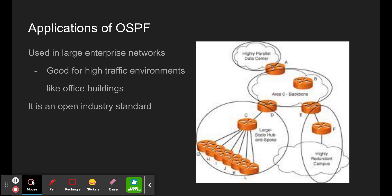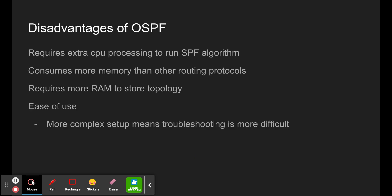Some applications of OSPF would be if you have a large enterprise network, because it is good for high traffic environments like office buildings and it is also an open industry standard. However, there are a few disadvantages: it requires extra CPU processing to run the SPF algorithm, it consumes more memory than other routing protocols, requires more RAM to store topology, and it is harder to use and troubleshoot due to its complexity.